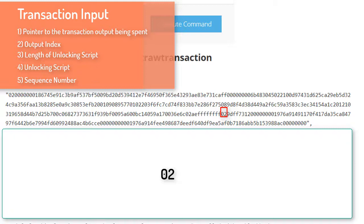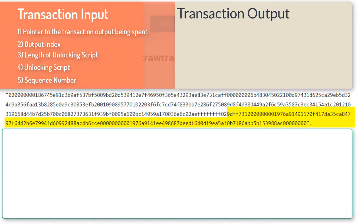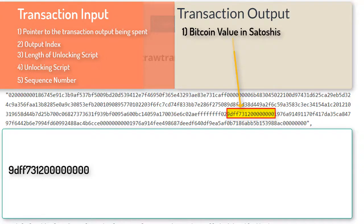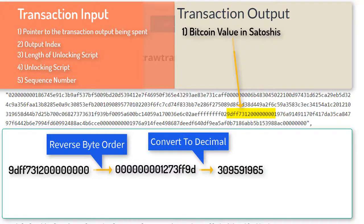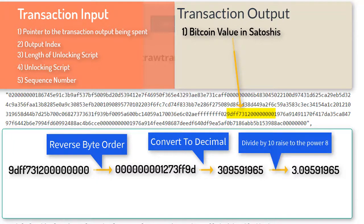After that, the next one byte is the count of output transactions, which is 2 in this case — '02'. This transaction has 2 output transactions. In the first output transaction, the first 8 bytes represent the Bitcoin value in satoshis, and in little-endian format. To get the Bitcoin value, you first reverse it one byte at a time, convert to decimal to get the value in satoshis, and then divide by 10 to the power of 8 to get the Bitcoin value.